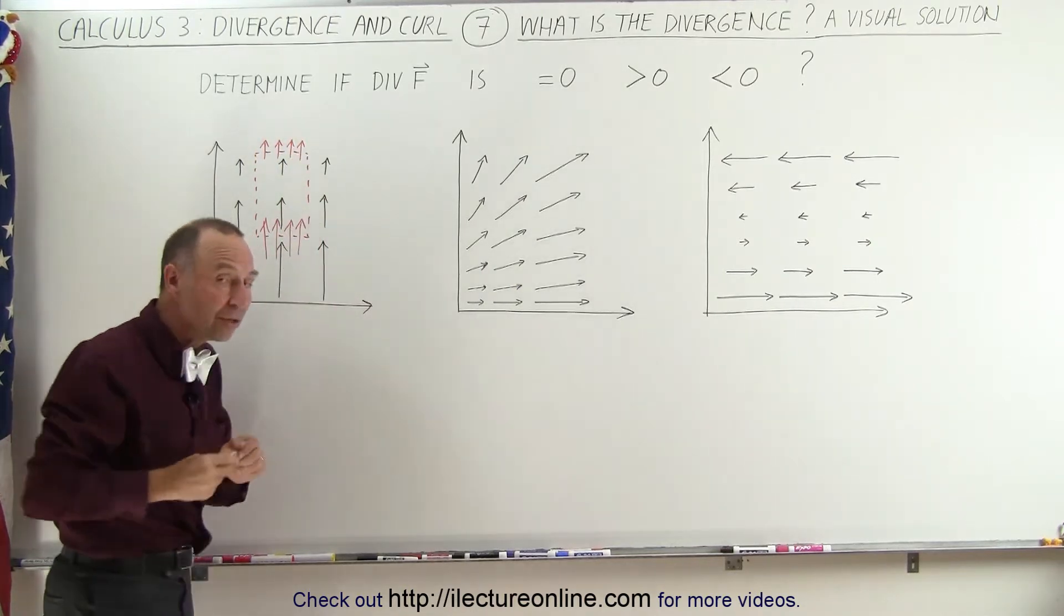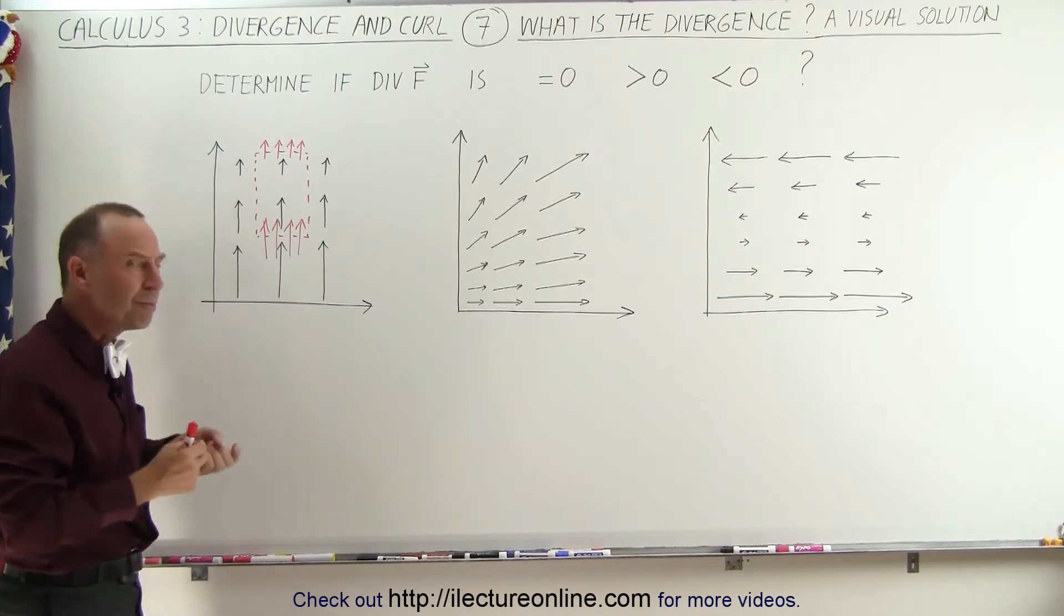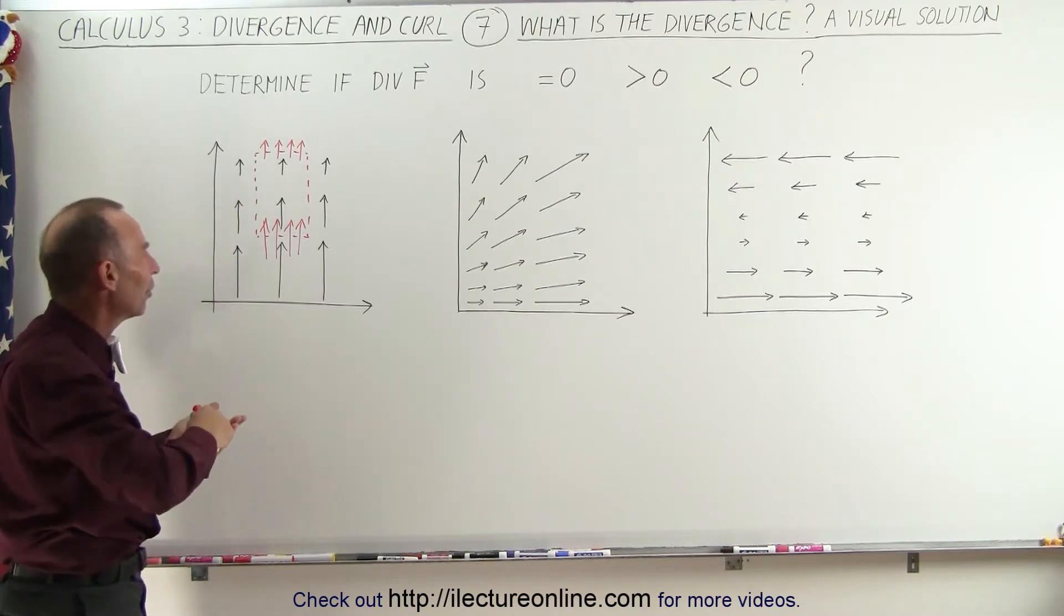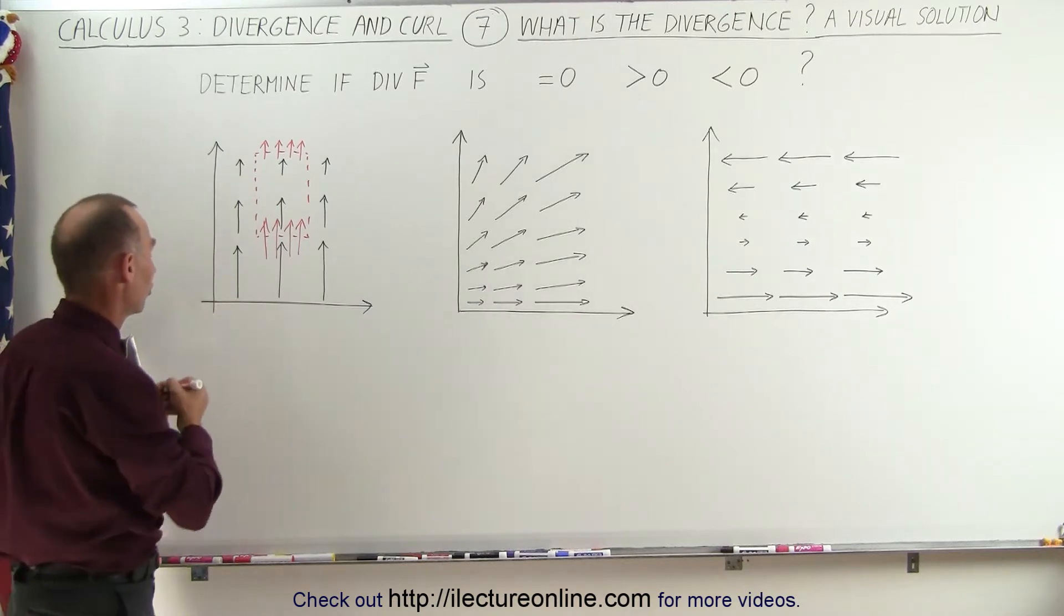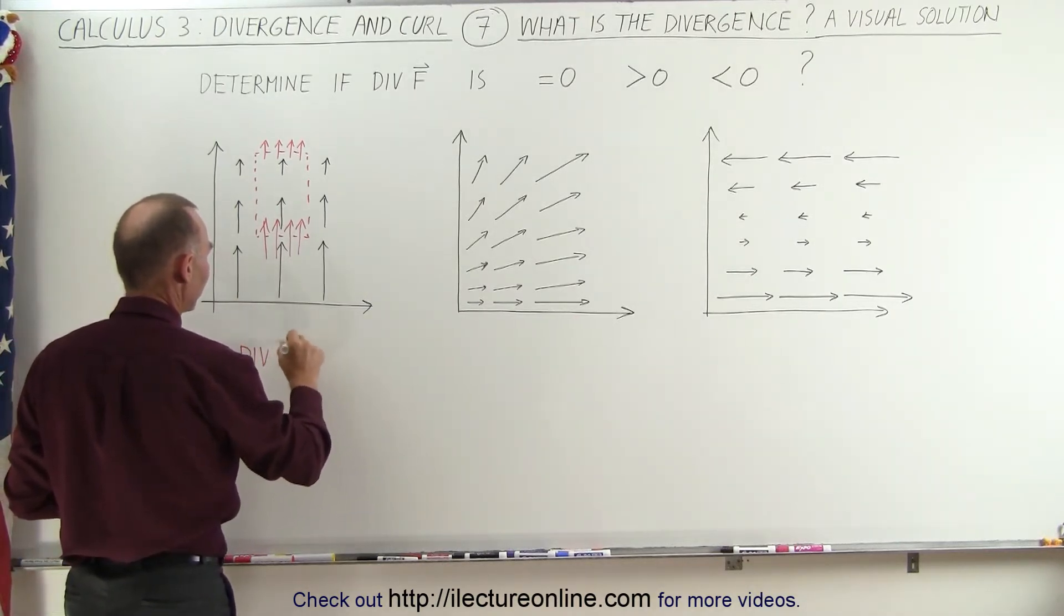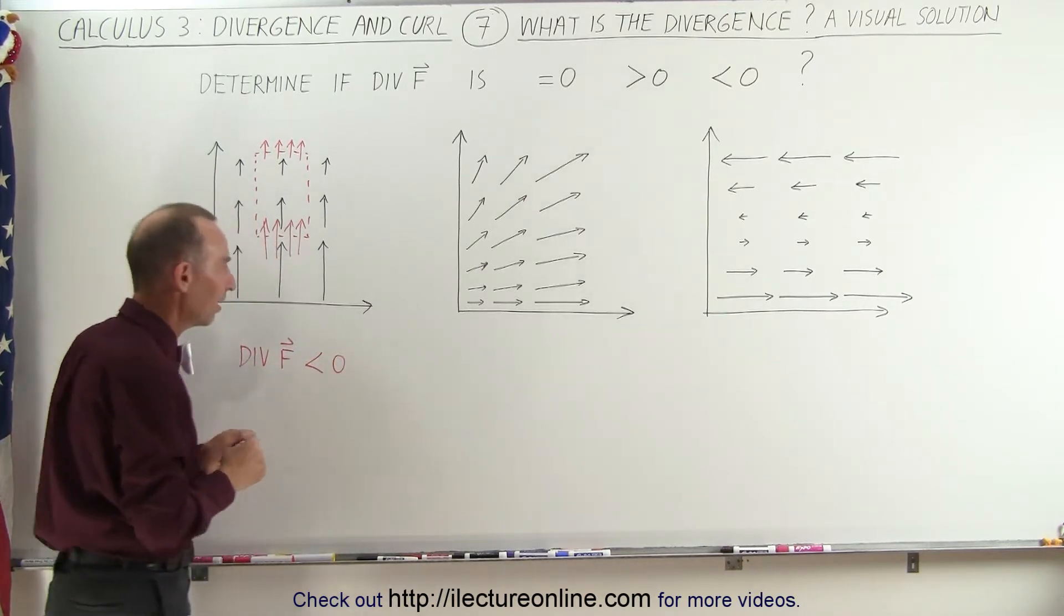So it appears as if we are losing flux. It's being diminished, which means that the divergence must therefore be less than zero. Since we are indeed losing, it's being diminished, so we can say that the divergence of our vector field, assuming it's F, is going to be less than zero in this case.